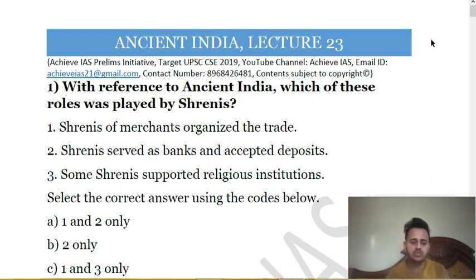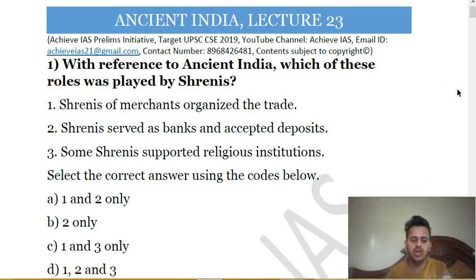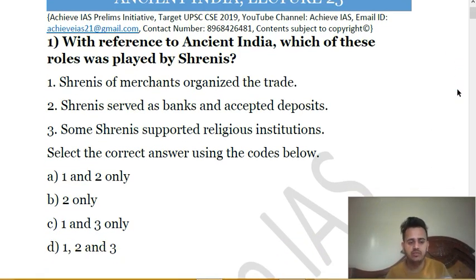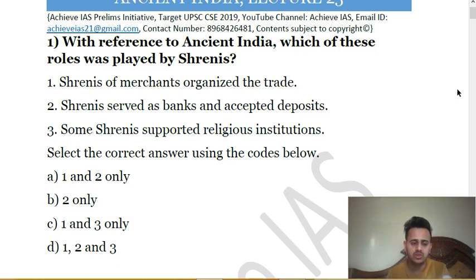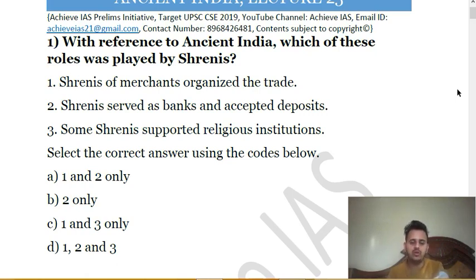Today's is lecture number 23 of Ancient India. The first question: with reference to ancient India, which of the following roles were played by Shrenies? First, Shrenies of merchants organized the trade. Second, Shrenies served as banks and accepted deposits. Third, some Shrenies supported religious institutions. We have to choose which of the above statements are correct.